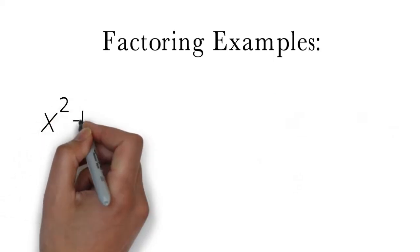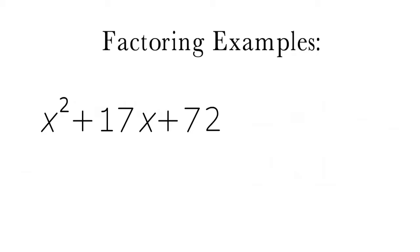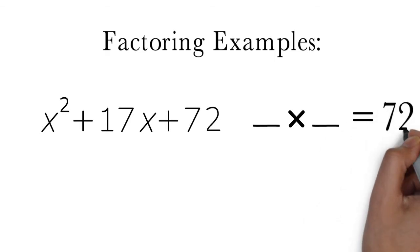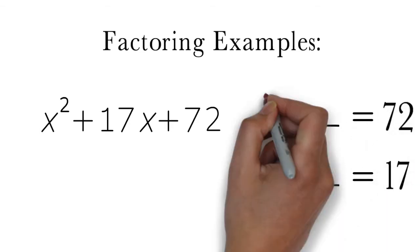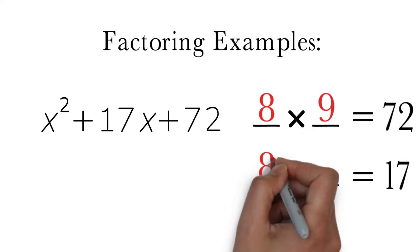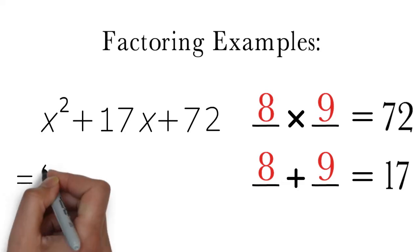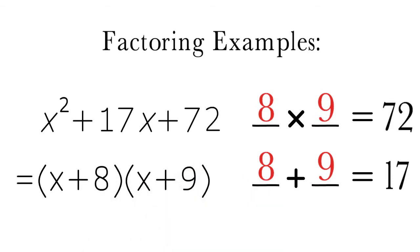Next, consider the trinomial x squared plus 17x plus 72. To factor this, we find two numbers that multiply to 72 and add up to 17. The numbers that do this are 8 and 9. Thus we can factor x squared plus 17x plus 72 as a product of the binomials x plus 8 and x plus 9.